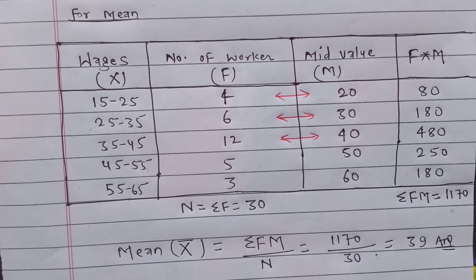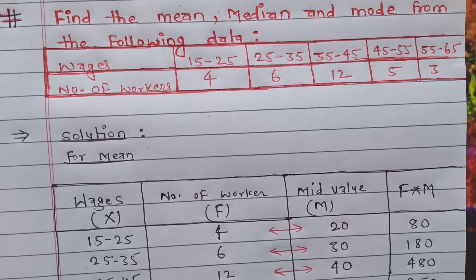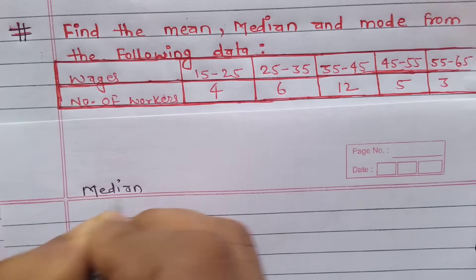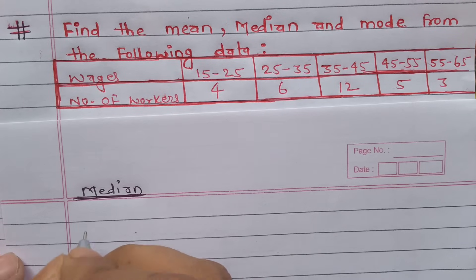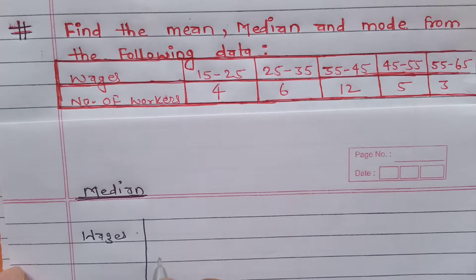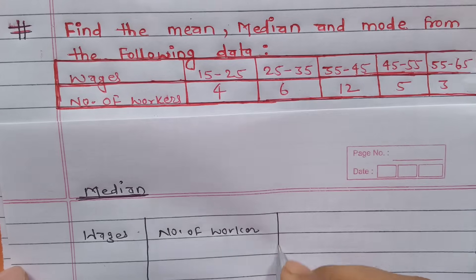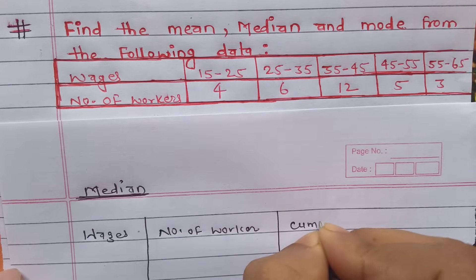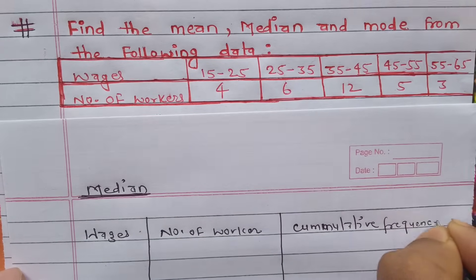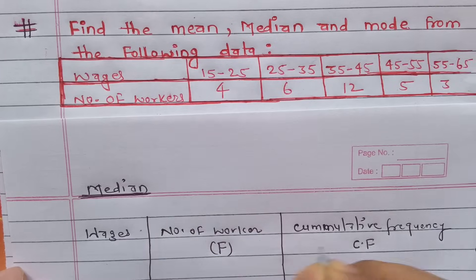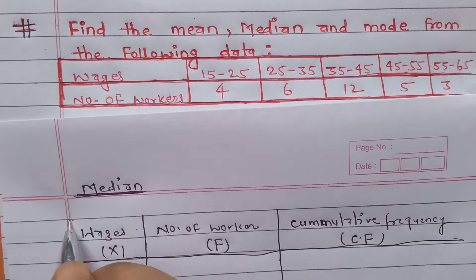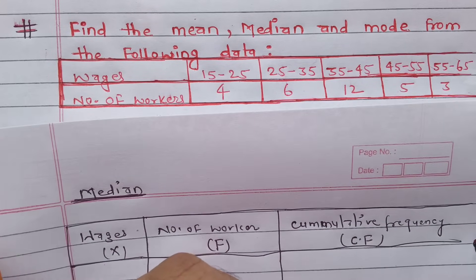Now I'm going to teach you about median using the same data. Solution for median. I'll make the same table: wages, number of workers, and now we add cumulative frequency. The notation for cumulative frequency is CF, frequency is F, and wages is X. This is the standard notation used in mathematics.